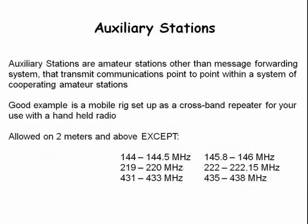Auxiliary stations can send information point to point within a system of coordinating amateur stations. Auxiliary stations are allowed on two meters and above except for the frequencies listed here. A good example of an auxiliary station is a mobile rig configured as a crossband repeater for use with a handheld radio.